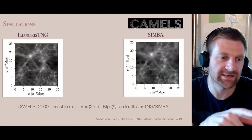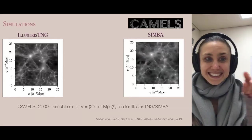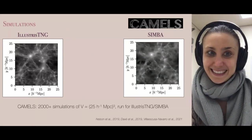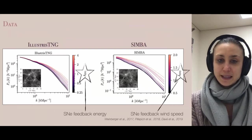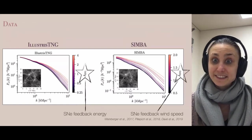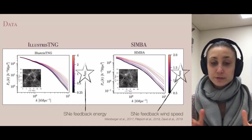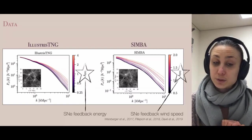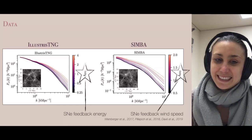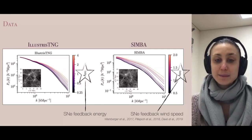This difference is due to the different physical modeling of baryons in these two simulations — with the same cosmology and the same precise initial conditions, as you can see because the blobs are more or less at the same positions. These differences between IllustrisTNG and SIMBA lead to very significant differences in the electron power spectrum P_ee as a function of wave vector k.